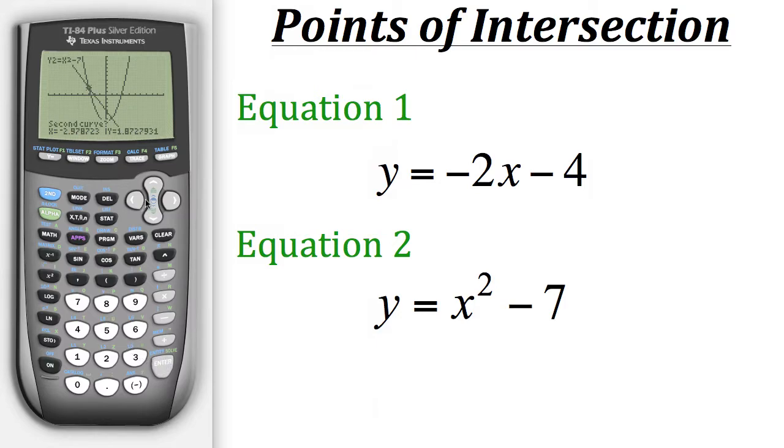Now we need to select the second equation involved in the intersection. If you look in the upper left hand corner, it has automatically selected y2. And that is what we need. But say for example if they didn't, then you could just use the up or down arrows to scroll through the different equations. And then once you get to the one you need, you could hit enter. So since we need y2 now, because we already selected y1, we just hit enter. The calculator asks you to guess where the intersection point is. But you don't have to do that. So you just hit enter.